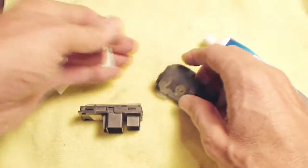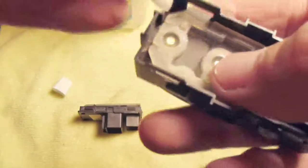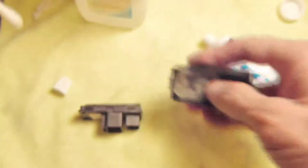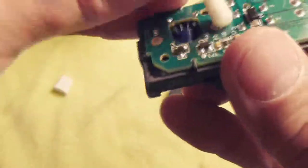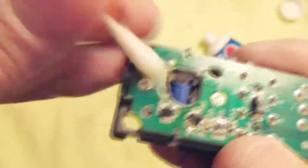And now we still have toothpaste on that we've got to get off. So what we're going to use is some rubbing alcohol. I've got a generous amount on another Q-tip. And I'm just going to use it to rinse the stuff clean. Just scrub it real good.